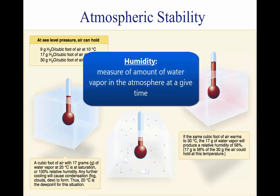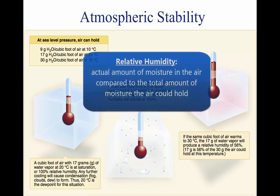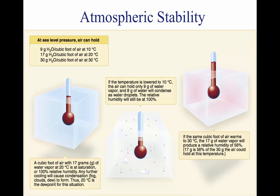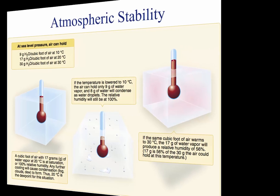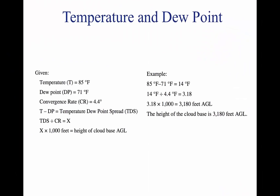Humidity refers to the amount of water vapor present in the atmosphere at a given time. Relative humidity is the actual amount of moisture in the air compared to the total amount of moisture the air could hold at that temperature. For example, if the current relative humidity is 65%, the air is holding 65% of the total amount of moisture that it is capable of holding at that temperature and pressure.